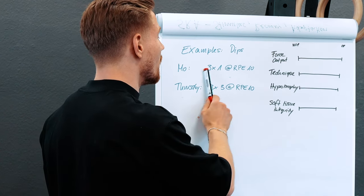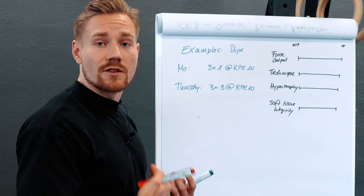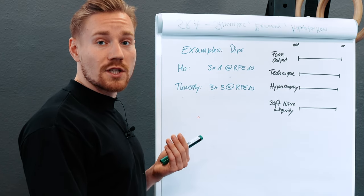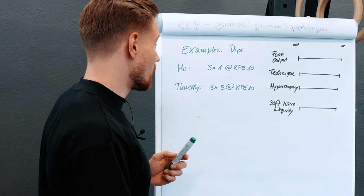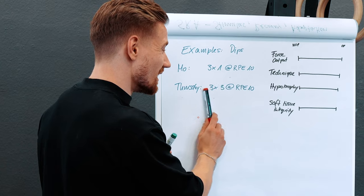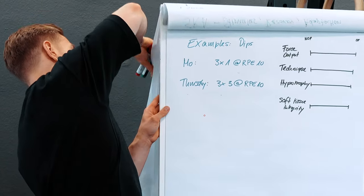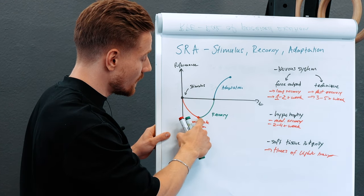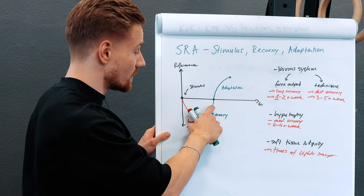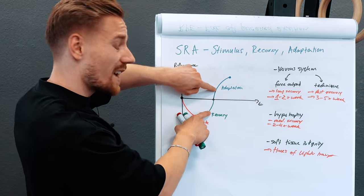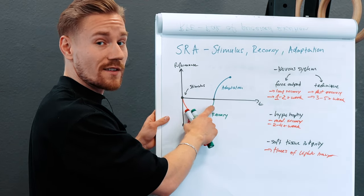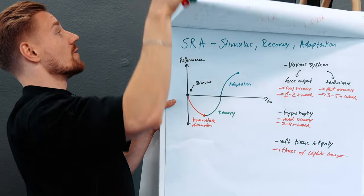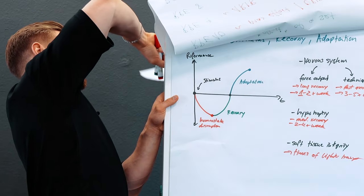There's a very high chance that this Monday session provides a very good stimulus to create a homeostatic disruption and lead to a high adaptation response for force output. However, looking at the Thursday session — also super heavy — it could be that we're providing it while still in the recovery phase. Depending on where we are in recovery, it may be too early to provide a second session that heavy, because performance hasn't increased yet.